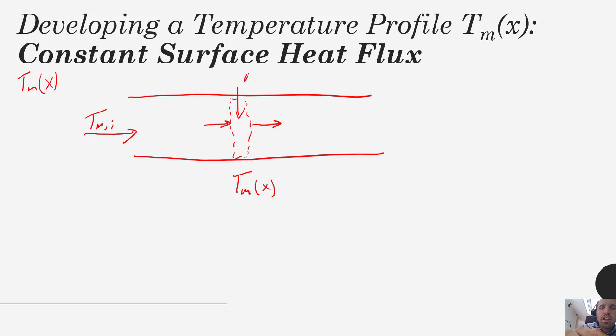Everywhere in the pipe we would have this flux coming in at q double prime s, where s denotes surface flux. What we could do is do an energy balance on that little section.